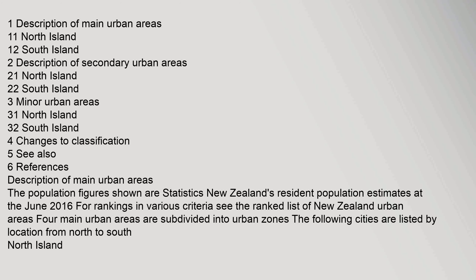Description of main urban areas: the population figures shown are Statistics New Zealand's resident population estimates at June 2016. Four main urban areas are subdivided into urban zones. The following cities are listed by location from North to South, North Island.